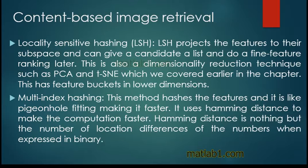We can use the image directly for similarity, but the problems are as follows. The image is of huge dimensions. There is a lot of redundancy in pixels. A pixel doesn't carry the semantic information. So, we train a model for object classification and use the features from the model for retrieval.